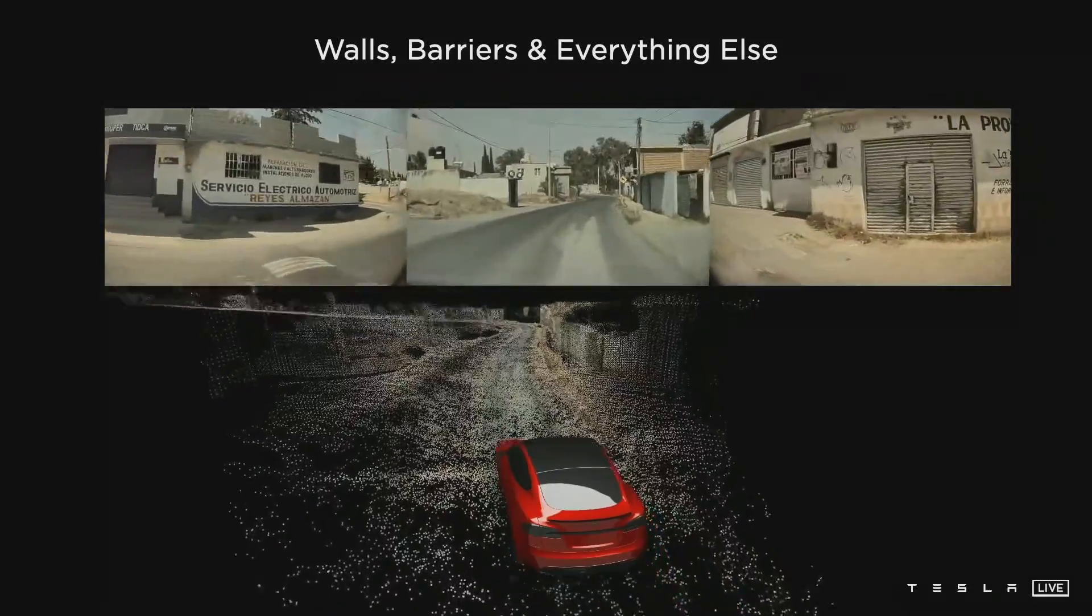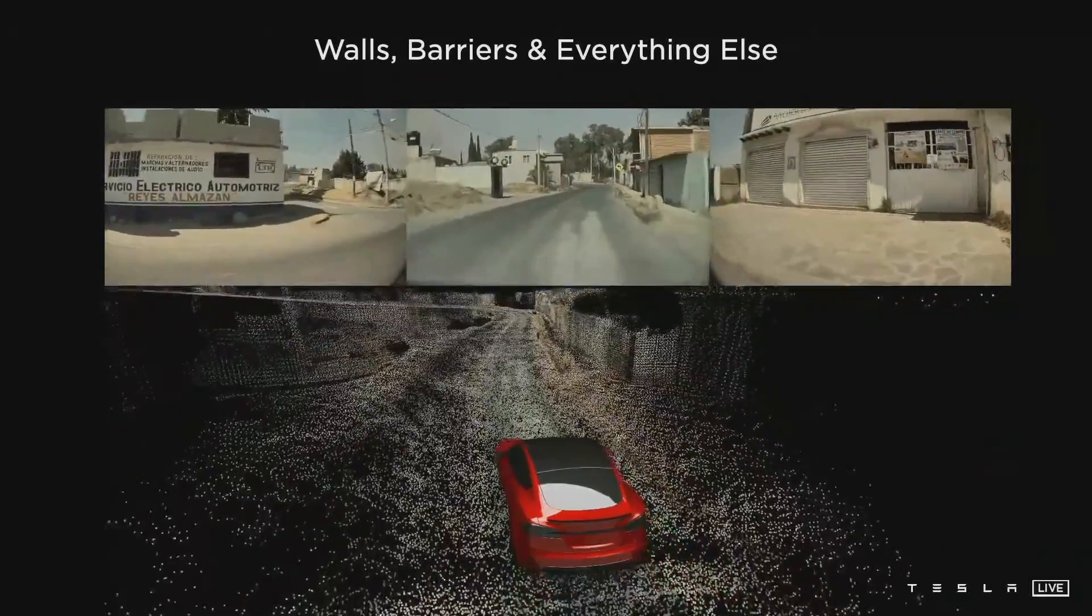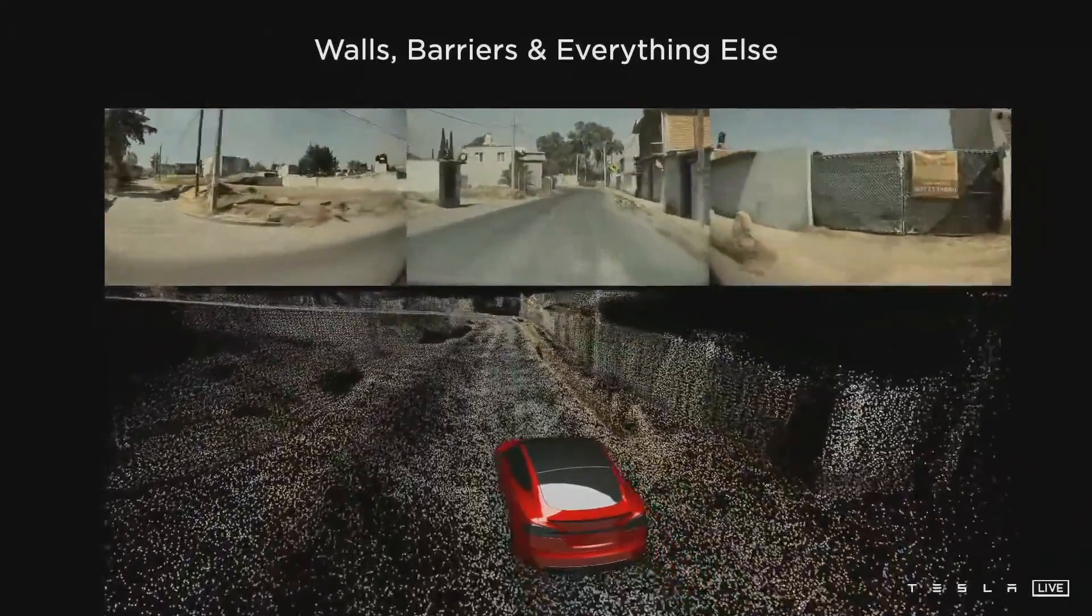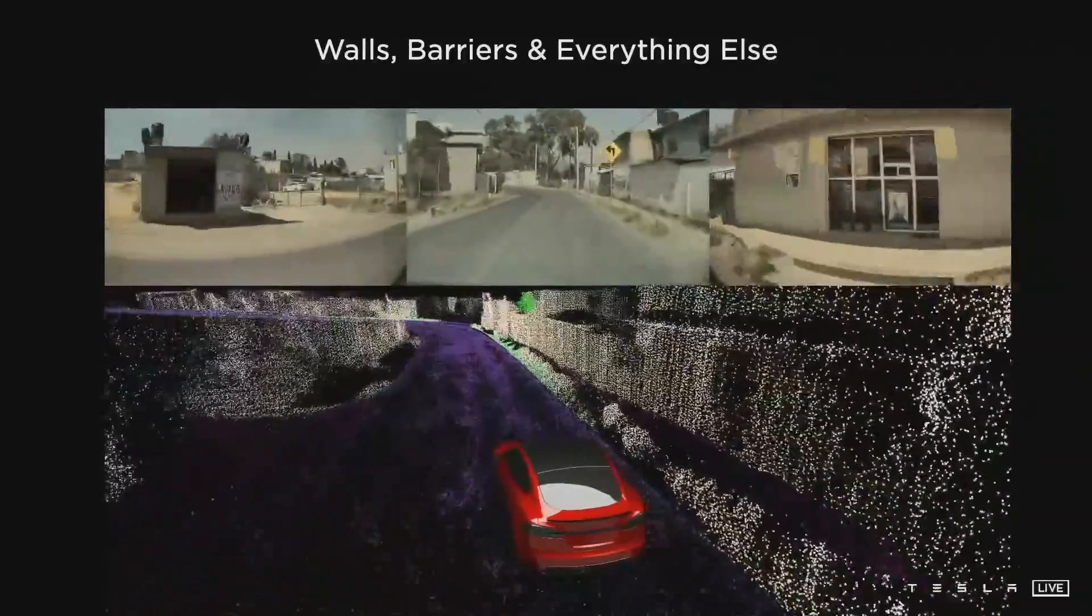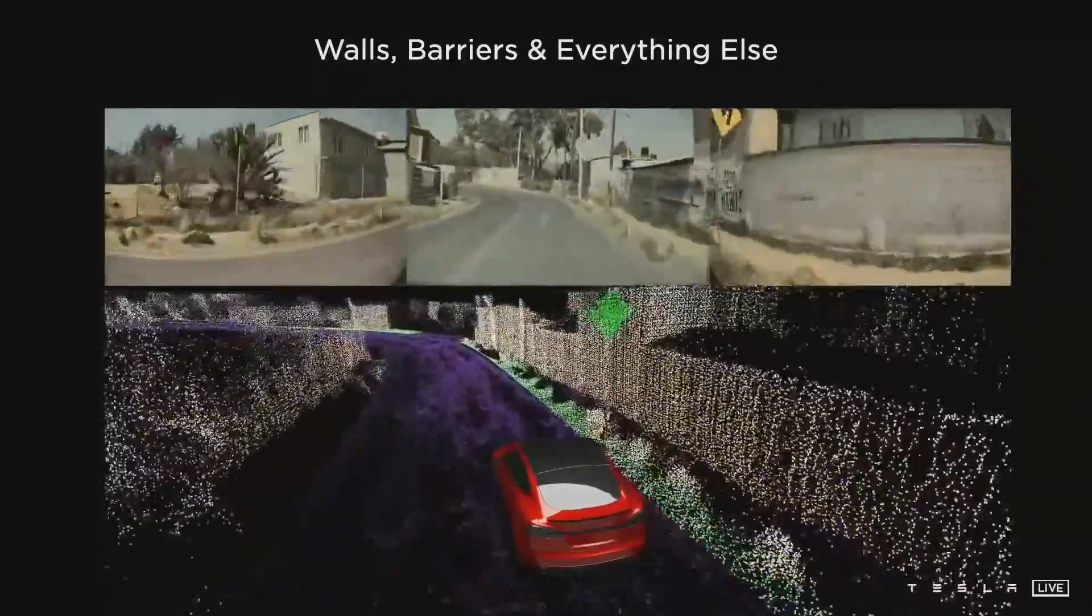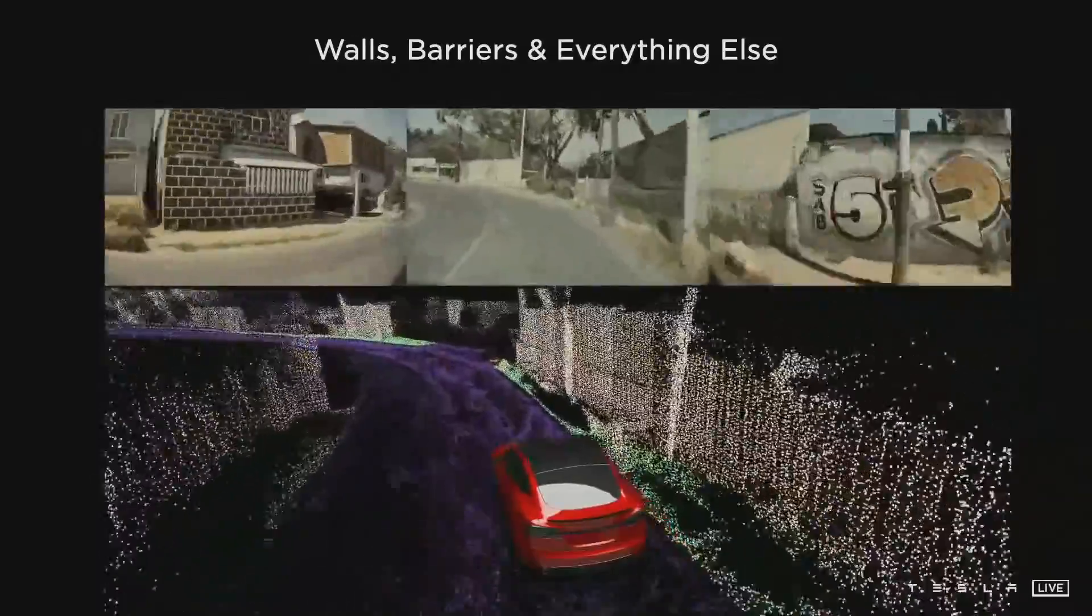We don't have to stop at just the road surface. We can also arbitrarily reconstruct 3D static obstacles. Here this is a reconstructed 3D point cloud from our cameras. The main innovation here is the density of the point cloud.